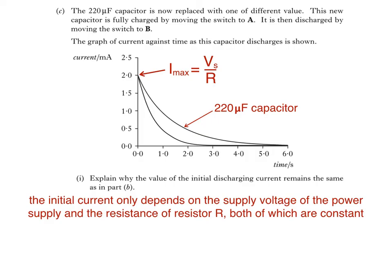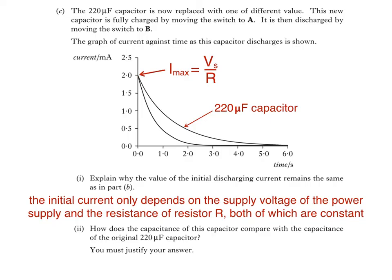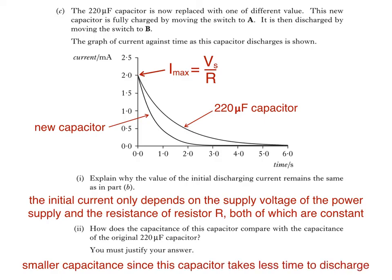The final part asks: how does the capacitance of this capacitor compare with the capacitance of the original 220 microfarad capacitor? You must justify your answer. Remember that this line is a graph of current against time for the new capacitor. You can see it takes less time for the current to decrease to zero - in other words, less time to discharge. It must be that this new capacitor has a smaller capacitance since it takes less time to discharge.